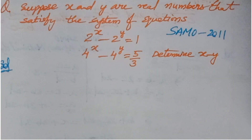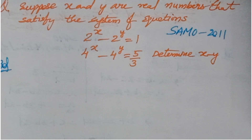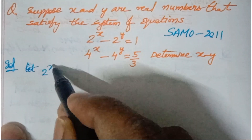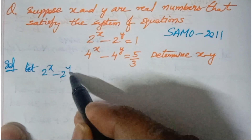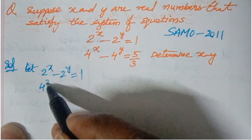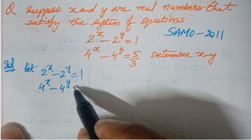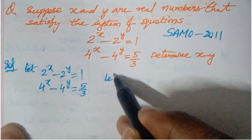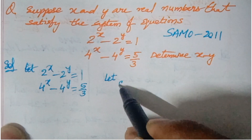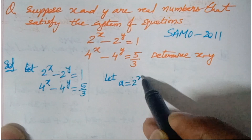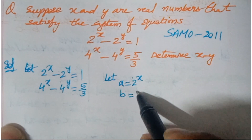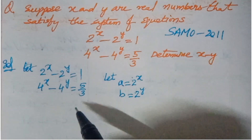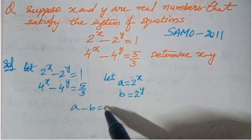This is a very simple question. What is given: 2^x minus 2^y equals 1, and 4^x minus 4^y equals 5/3. Let a = 2^x and b = 2^y. So the first equation becomes a minus b equals 1.